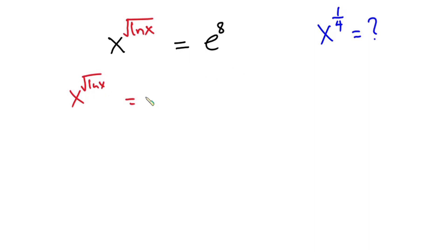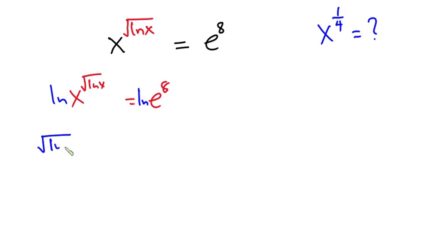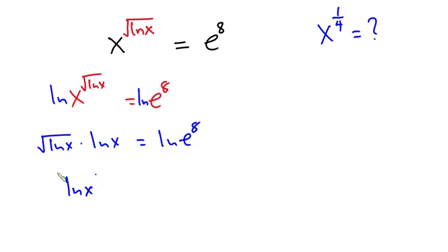We have x to the power square root of ln of x is equal to e to the power 8. Let's introduce natural log on both sides of the equation so that the rules of logarithm will permit us to move the exponent to the front. We get square root of ln(x) times ln(x) is equal to natural log of e to the power 8. Since ln and e undo each other, the right side equals 8.